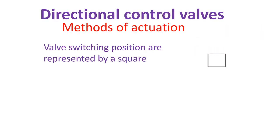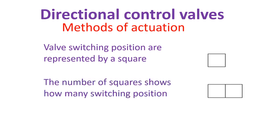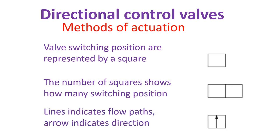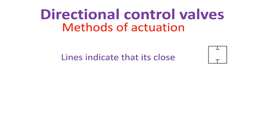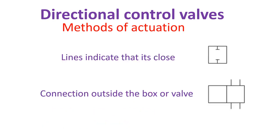Now let's get started on how to read directional control valves. Valve switching positions are represented by a square. The number of squares shows how many switching positions there are. Lines indicate flow path, arrows indicate direction, and a line across the box indicates it is closed. Connections appear outside the box or valve.